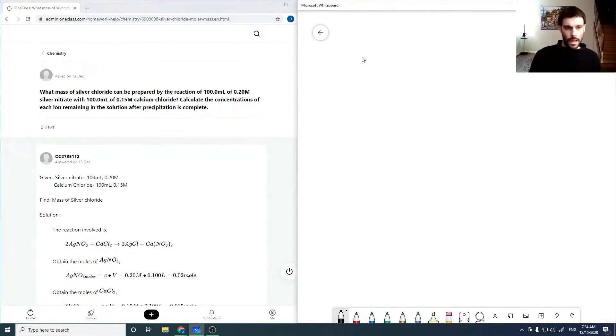Okay, so a wet mass of silver chloride can be prepared by the reaction of silver nitrate with calcium chloride. We're given that this is 100.0 mL of 0.20 molar and 100.0 mL of 0.15 molar.